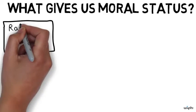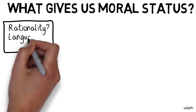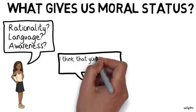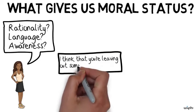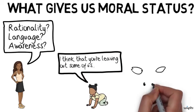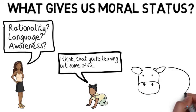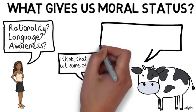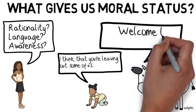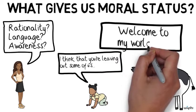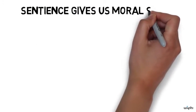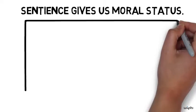Well, one option is to say that rationality or language or self-awareness gives us moral status, but this view would imply that many human beings, like infants and severely disabled human beings, lack moral status because they lack these capacities, and that view seems deeply implausible to many people. So for that reason, many philosophers have argued that we should expand the circle of moral concern by saying that sentience, or in other words, the capacity for conscious experiences like pleasure and pain, is what gives us moral status.